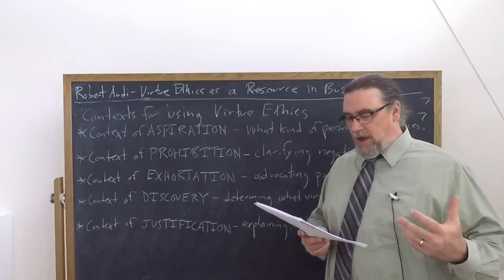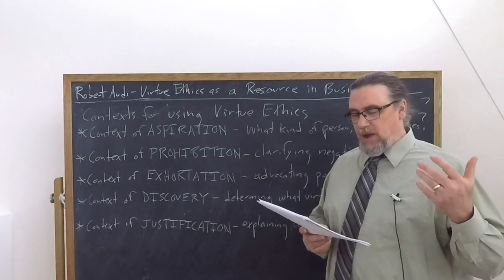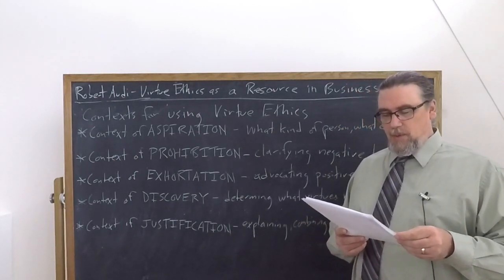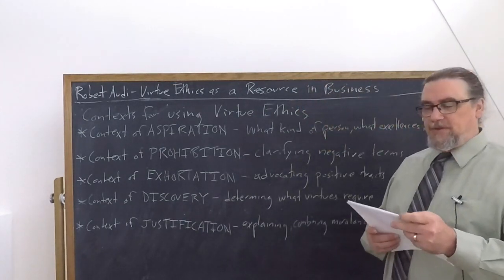So he says that all of these help us to decide what kind of person we want to be, or less broadly, what kind of business person we want to be. Then finally, we have the context of what he calls justification.